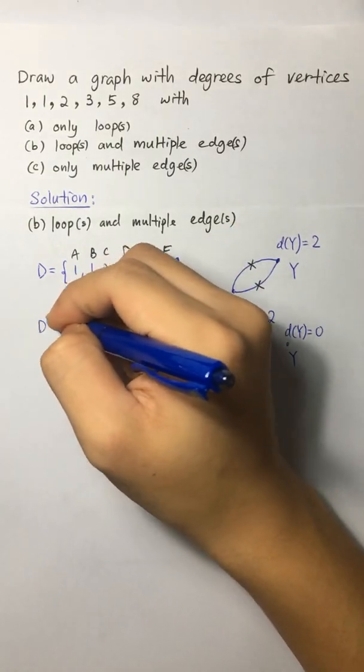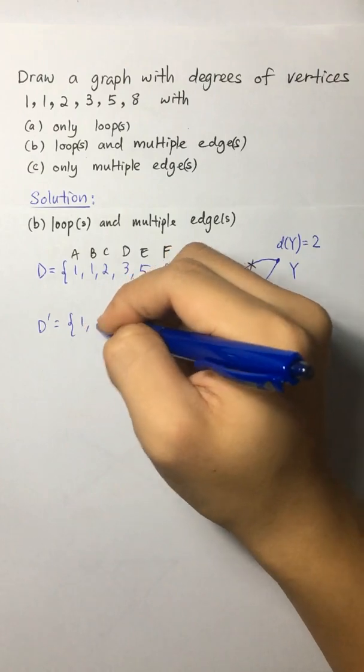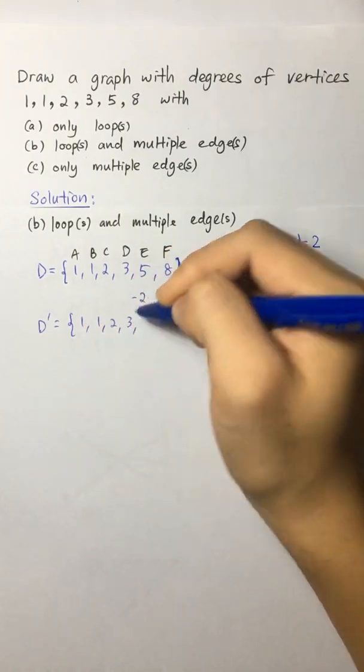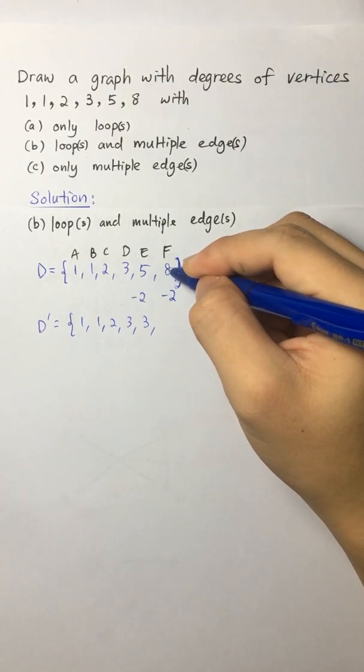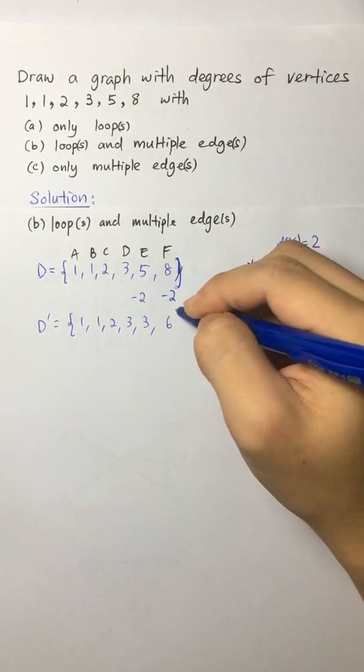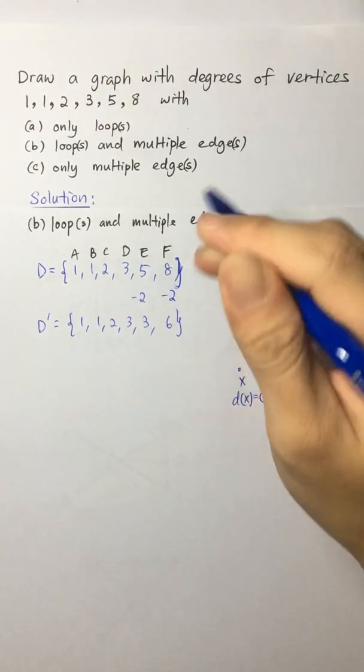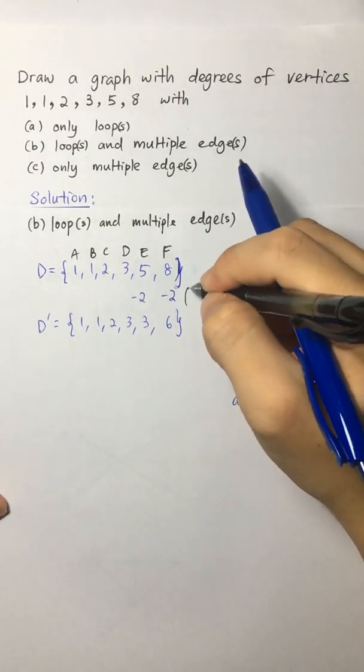And then we write D prime equals to 1, 1, 2, 3, 5 minus 2 is 3, 8 minus 2 is 6. So now we know here there's a pair of multiple edges.